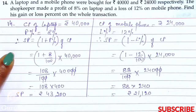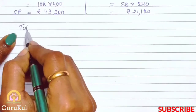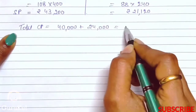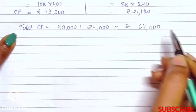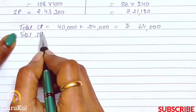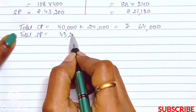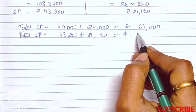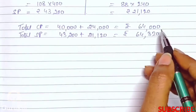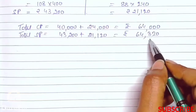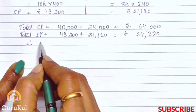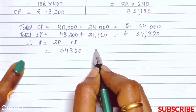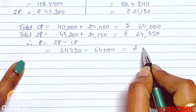Now we need to find the overall profit or loss. Total CP = 40,000 + 24,000 = Rs. 64,000. Total SP = 43,200 + 21,120 = Rs. 64,320. As we can see, he has made a profit of Rs. 320. Therefore, Profit = SP − CP = 64,320 − 64,000 = Rs. 320.